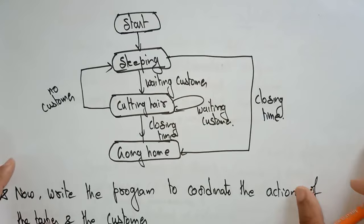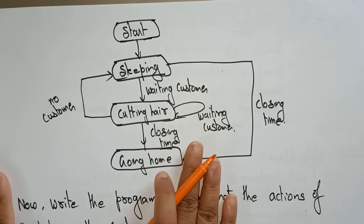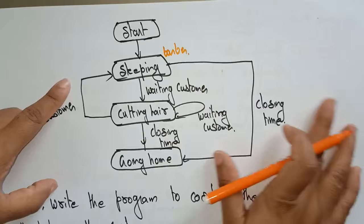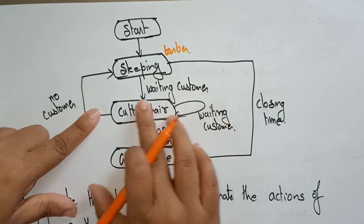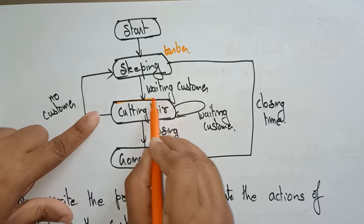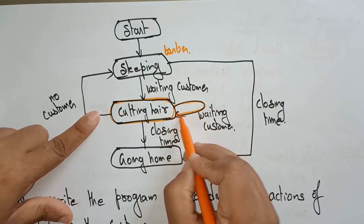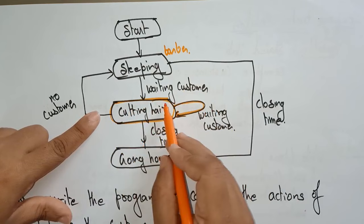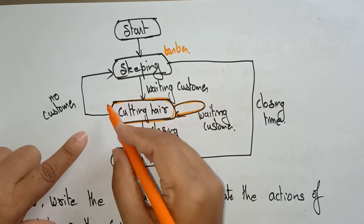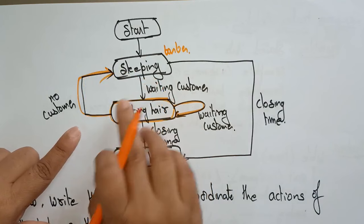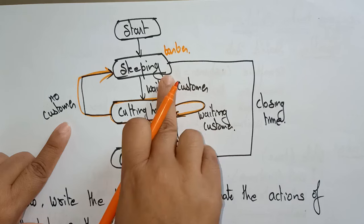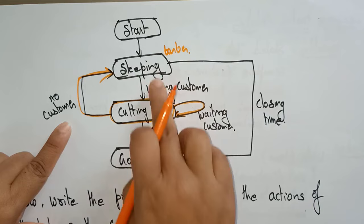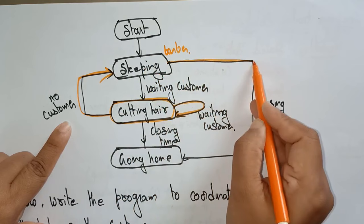Now I'll explain using a flowchart. The barber starts by sleeping because no customer is present. Whenever a customer arrives and is waiting, the barber is ready to do the haircut. For every customer, he performs the haircut. When all customers are served and the waiting room chairs are all free, the barber goes back to sleep. He repeats this cycle: sleeping when idle, cutting hair when customers arrive.